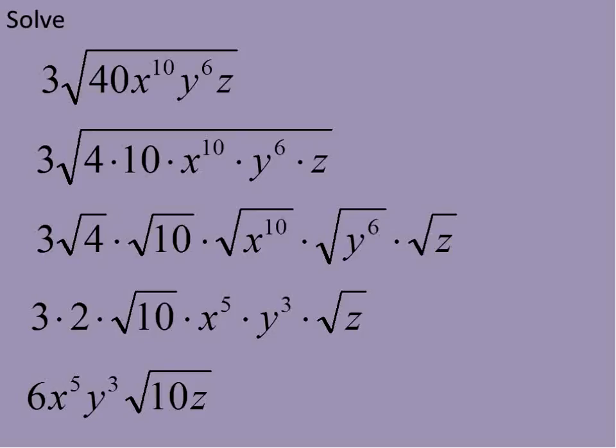We'll join together everything that's outside of the square root symbols, and that's when we deal with our 3. Because we have our 3 there, we're going to multiply it out 3 times 2, which gives us 6, and then we multiply our variables together, x to the power of 5, y to the power of 3, and then our 10 and z remain under the square root symbol.